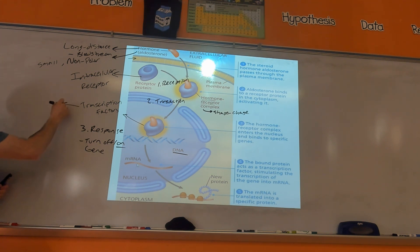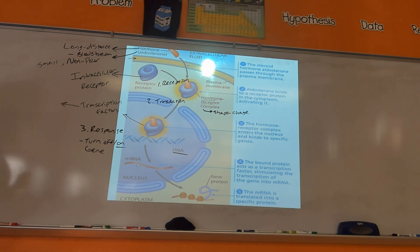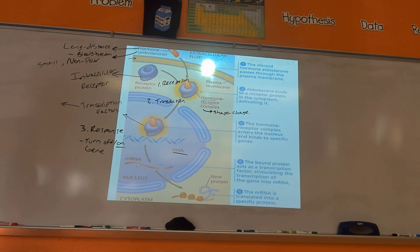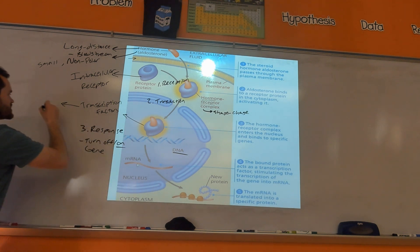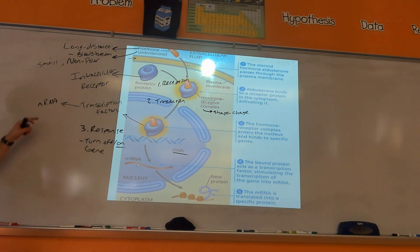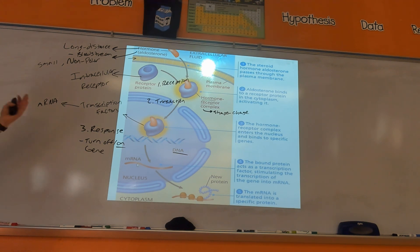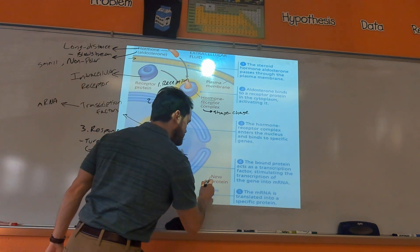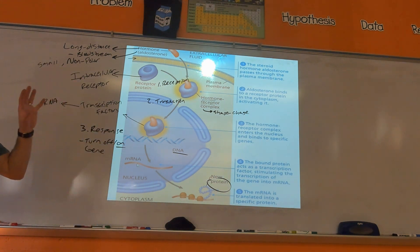If you remember from freshman bio, what was the purpose of transcription? Transcribing mRNA — that's right. Transcription is making a messenger RNA copy, which is a copy of the gene that you want to use. And remember, the purpose of genes is that genes make proteins. So don't lose sight of what we're doing here: the purpose is that you have a hormone, aldosterone, and aldosterone's goal is to make certain proteins.